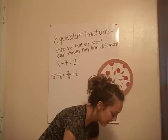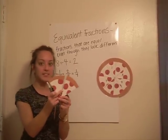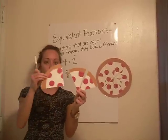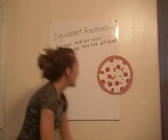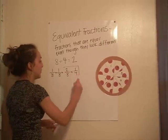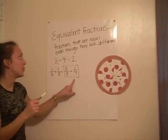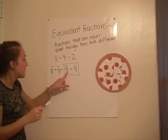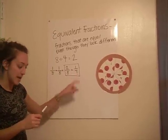So therefore, 2 eighths is equal to 1 fourth. Right here, we have just experimented with one equivalent fraction. They look completely different, but they equal the same amount.